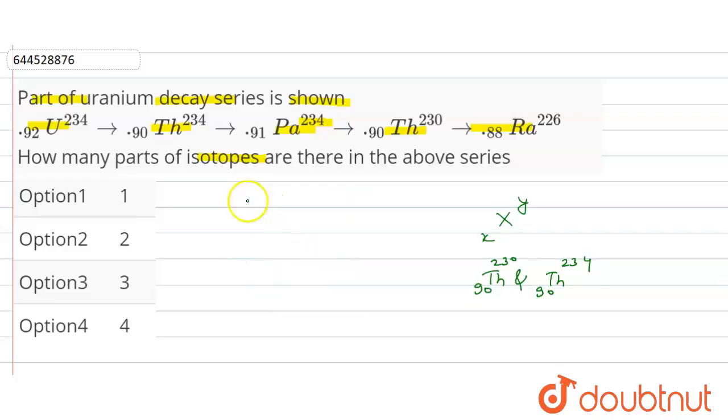So Thorium-90 with mass 230 is an isotope of Thorium-90 with mass 234. The number of isotope pairs in the above decay series is one, so our correct option is option first.